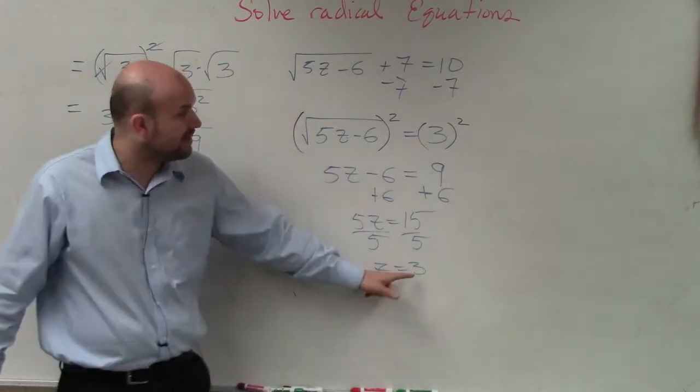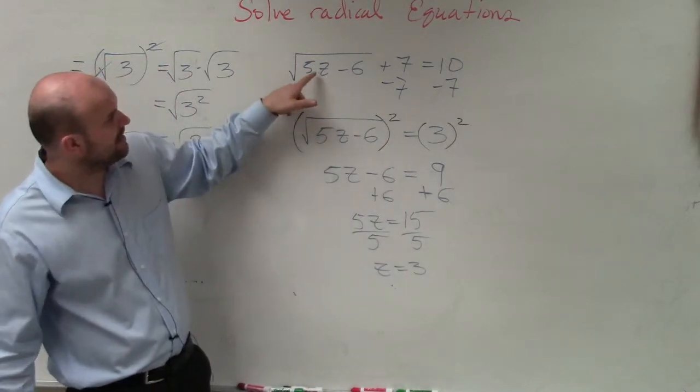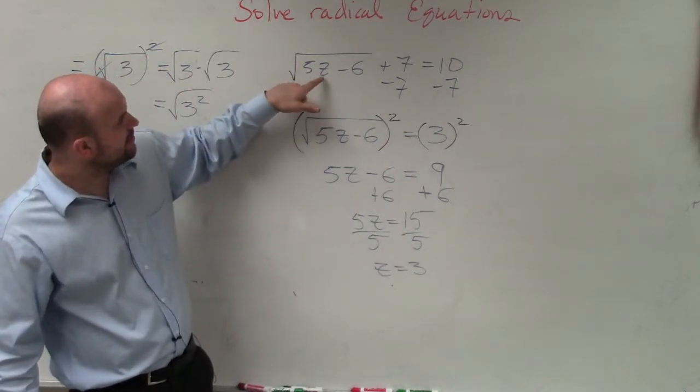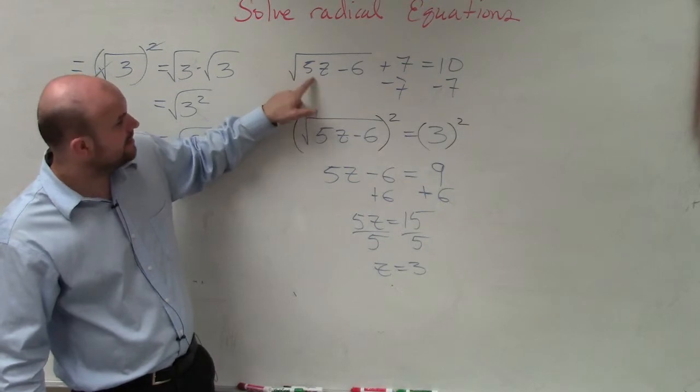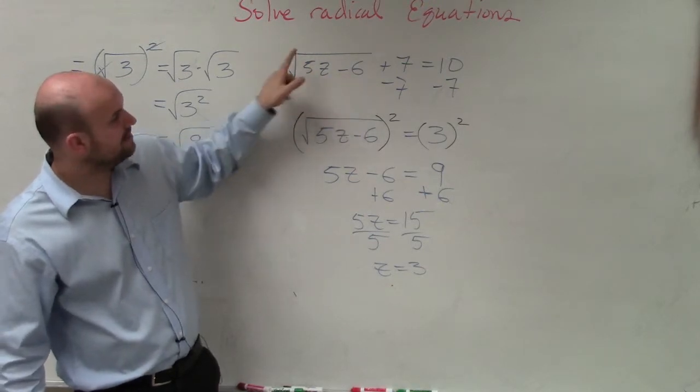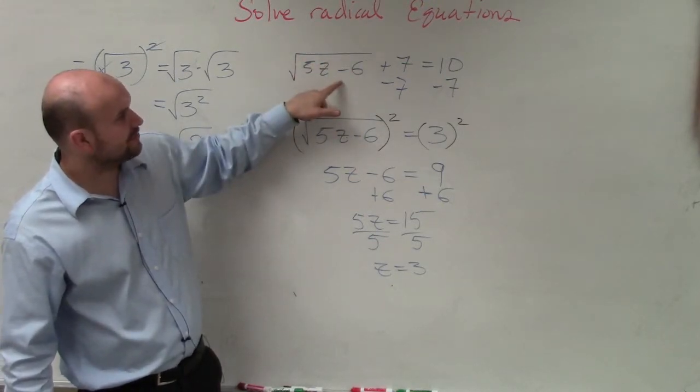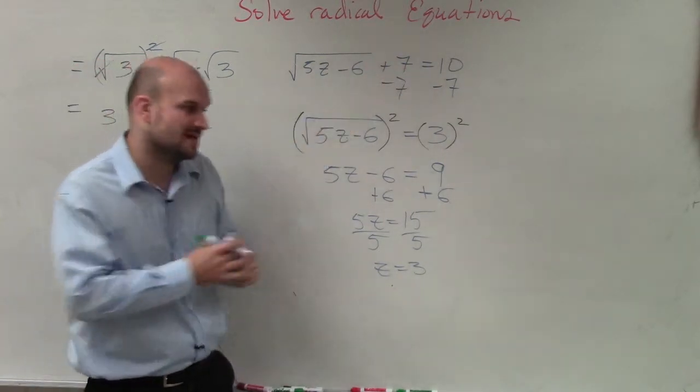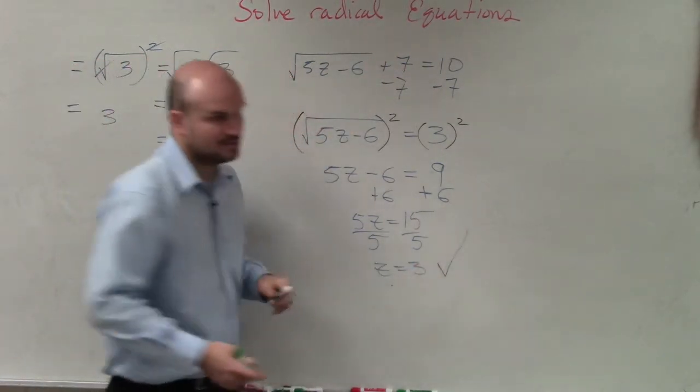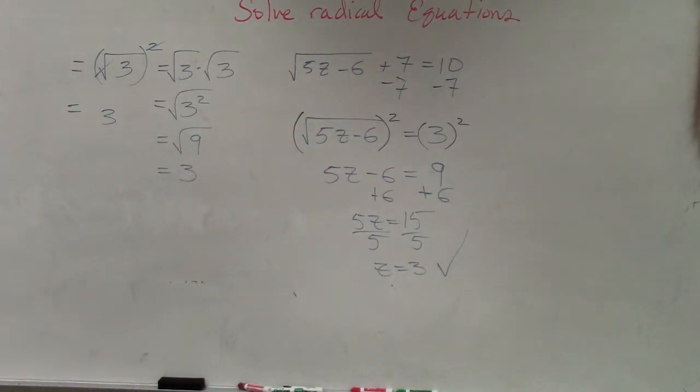Again though, please make sure you guys go back and plug your answer in. So if I plug in my answer, I have 3 times 5, which is 15. 15 minus 6 is 9. The square root of 9 is 3. 3 plus 7 equals 10. So it works. We will have answers that are not going to work, so just make sure you guys check it.